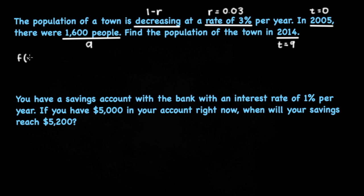Now what we can do is we can plug in our values into our exponential decay model. F of t is equal to a times 1 minus r to the t. If we plug in what we know, we get f of t is equal to 1,600 times 1 minus 0.03 to the t power.